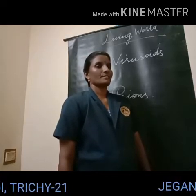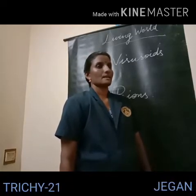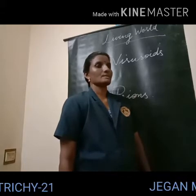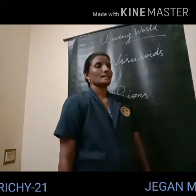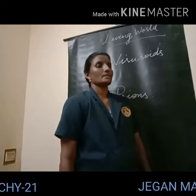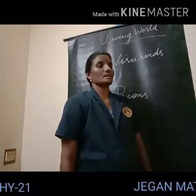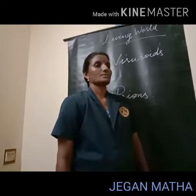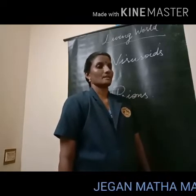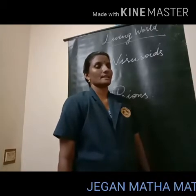Prions are proteinaceous infectious particles. They are the causative agents for fatal degenerative disorders of the central nervous system. Fatal means death, so it is a disease which causes death. It affects the central nervous system of humans as well as other animals. An example is bovine spongiform encephalopathy, shortly called BSE.